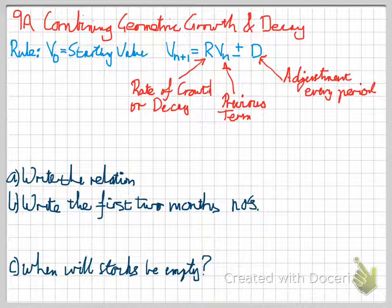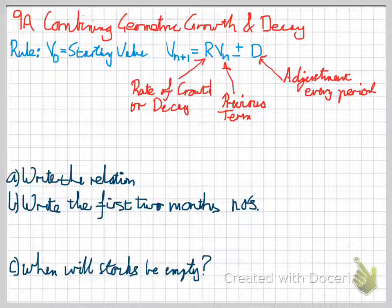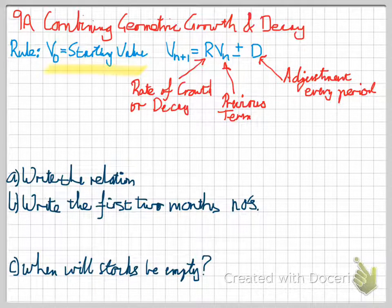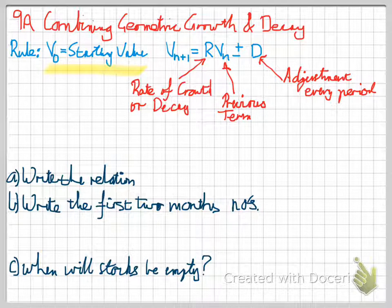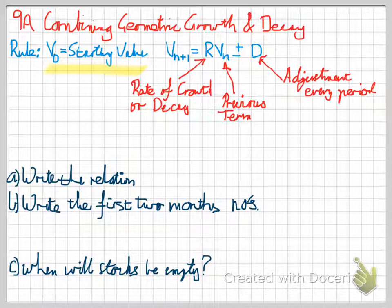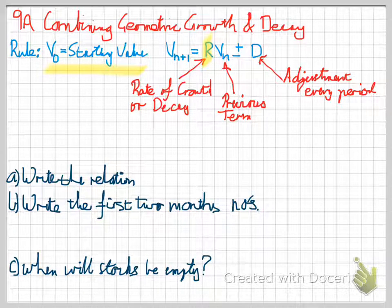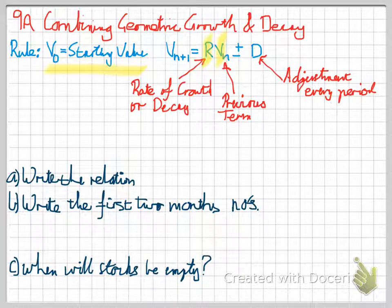So you can see here, we've got the pretty similar rules for the recurrence relation. We've got V0 as your starting value, just here, and then Vn+1. So every new term is the rate of growth or decay, which we've seen before, times by the previous term. So that should be familiar based on our previous geometric growth and decay.